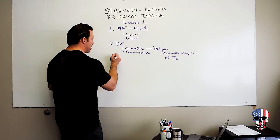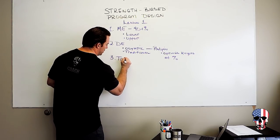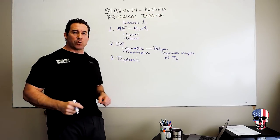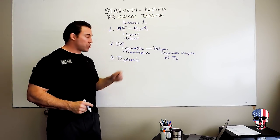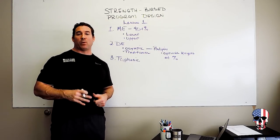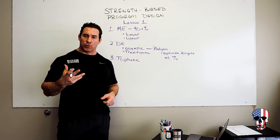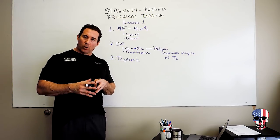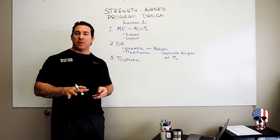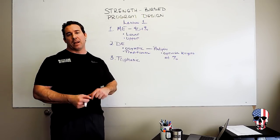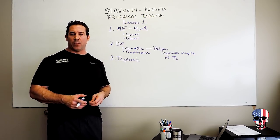The third thing that we do was developed by strength coach Cal Dietz. It's the triphasic method. So the triphasic method is understanding that each time you do a movement, the muscle goes through three phases of contraction. The eccentric or when the muscle stretches, the isometric is when the muscle stops and sits balanced, and then the concentric is when the muscle contracts.